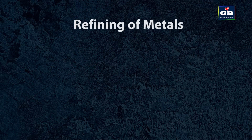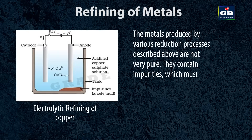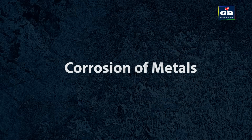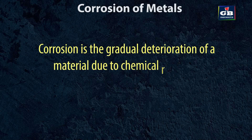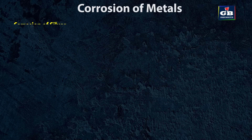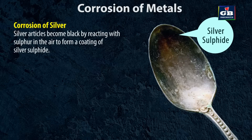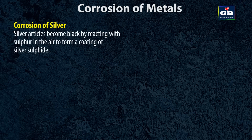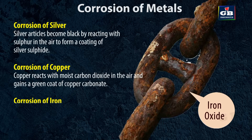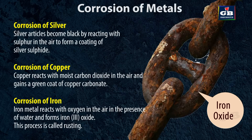Refining of metals: the metals produced by various reduction processes are not very pure and contain impurities which must be removed to obtain pure metals. The most widely used method for refining impure metals is electrolytic refining. Corrosion is the gradual deterioration of a material due to chemical reactions with its environment, mostly by oxidation. Silver articles become black by reacting with sulfur in the air, forming a coating of silver sulfide. Copper reacts with moist carbon dioxide in the air and gains a green coat of copper carbonate. Iron reacts with oxygen in the presence of water and forms iron oxide — this process is called rusting.